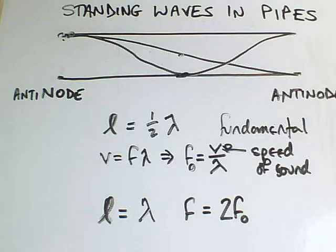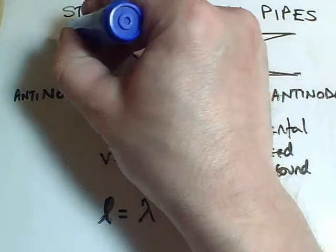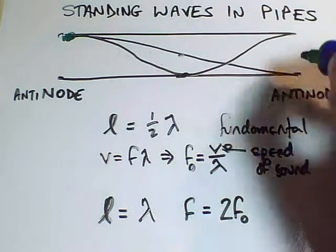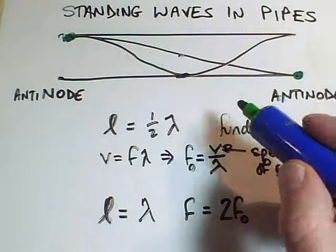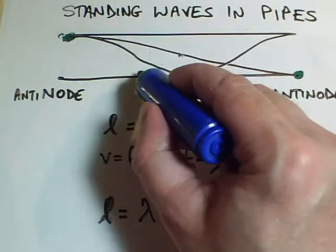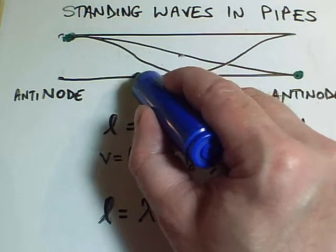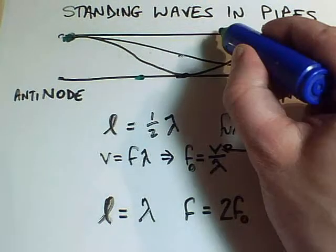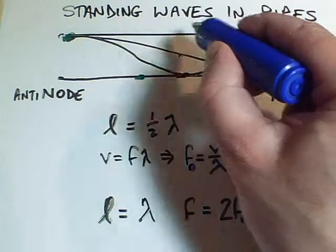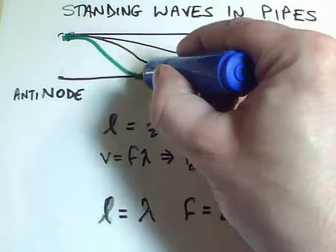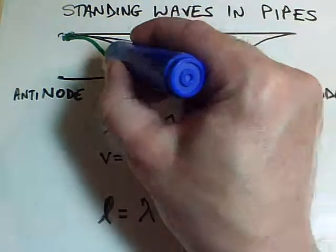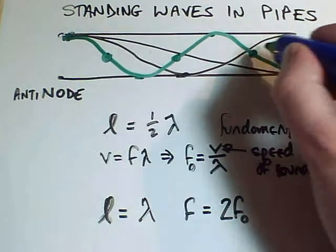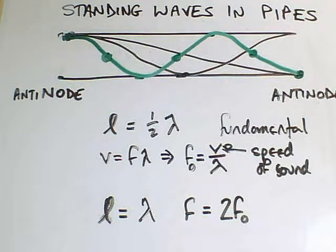And then we can go to higher harmonics. Maybe I'd better do the next one in a different color. So I'm going to go from this anti-node here. I'm now going to end up down here as I did with the first one. But I'm going to go via two more anti-nodes. So I'm going to have an anti-node hitting the bottom here and an anti-node in phase with the first one here. And go via various nodes. There we go. So now I've got one, two, three nodes.